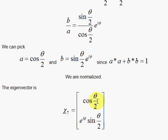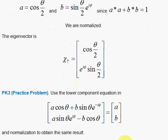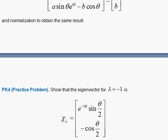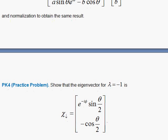Very nice result. If you look at the lower component equation, you can arrive at the same result — that's a neat little thing to do. And if you set up the negative eigenvalue problem, you can arrive at the other solution. It's a nice little exercise because the steps are very similar to what we've already done.